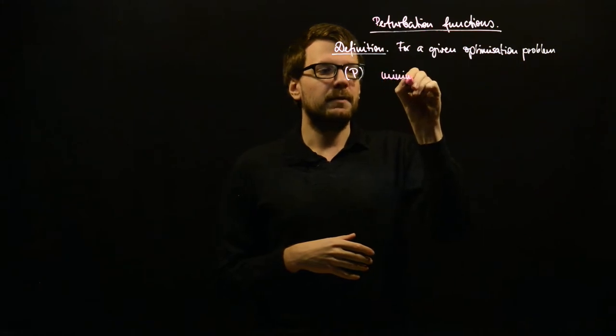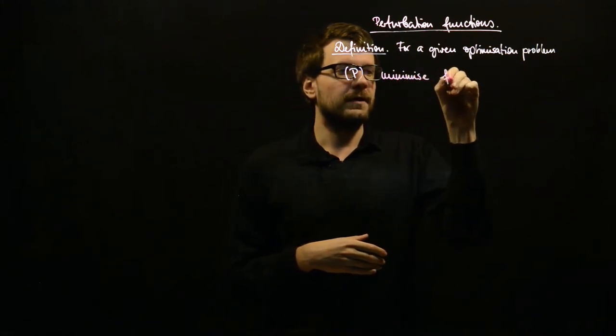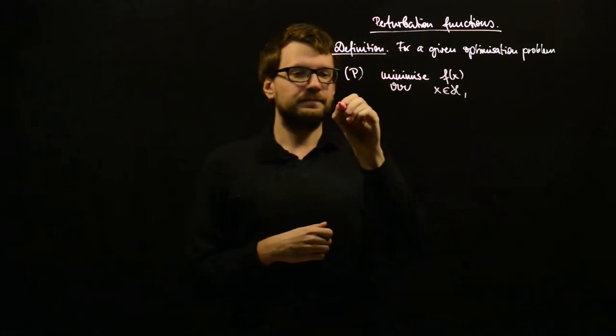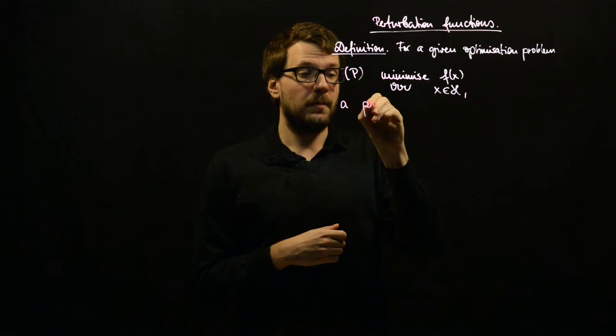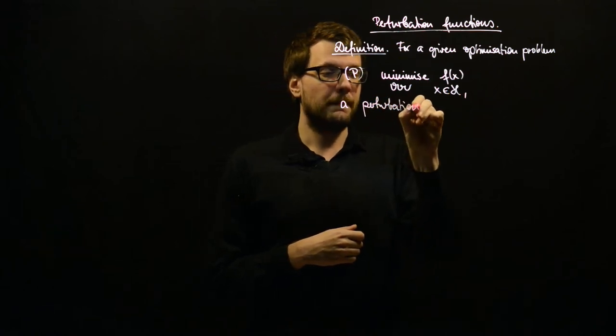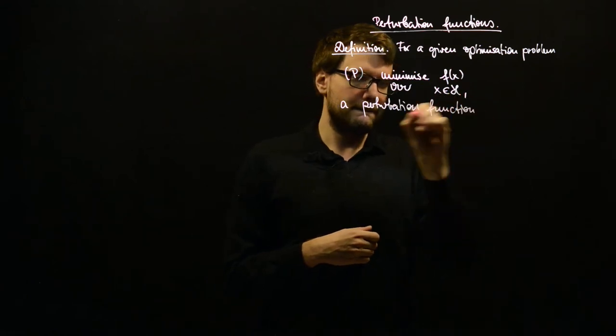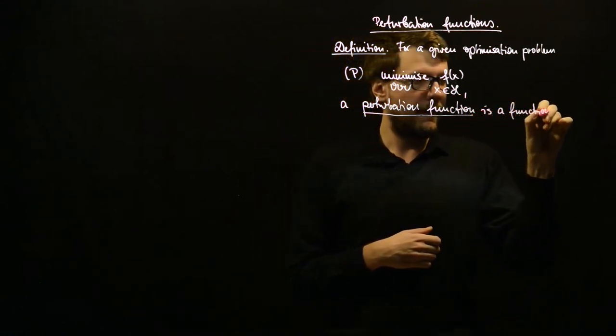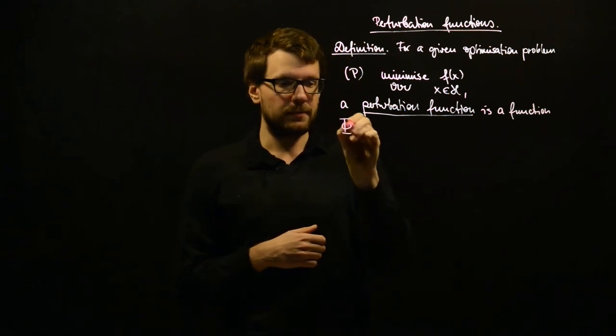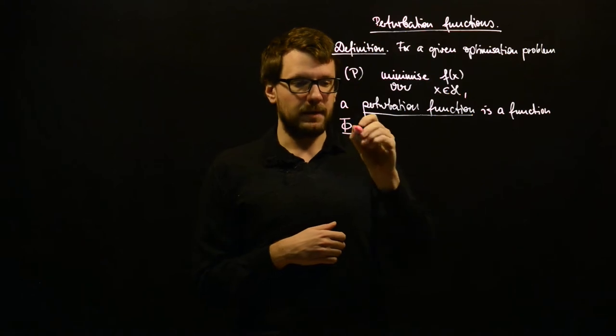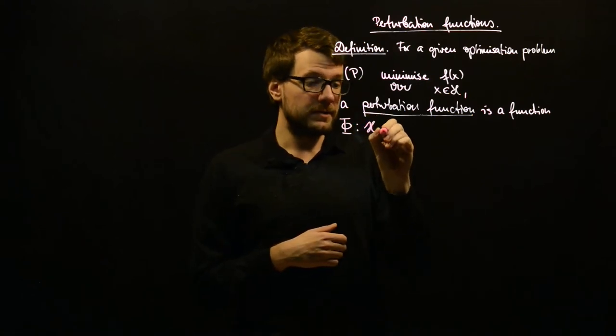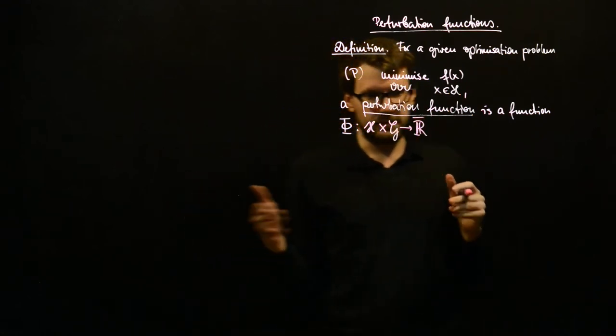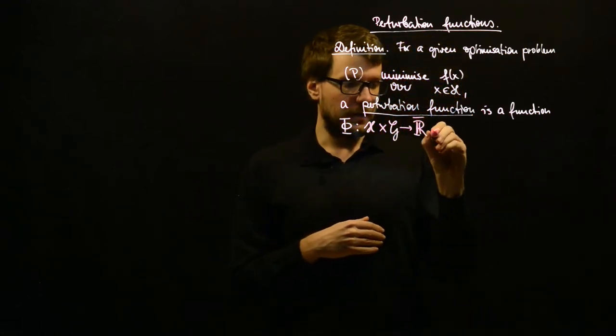So, we want to minimize f of x over x in H. So, for a given optimization problem, a perturbation function is a function, and we denote this by capital phi, and capital phi maps from the Cartesian product of two spaces, H and G, to the extended real line.